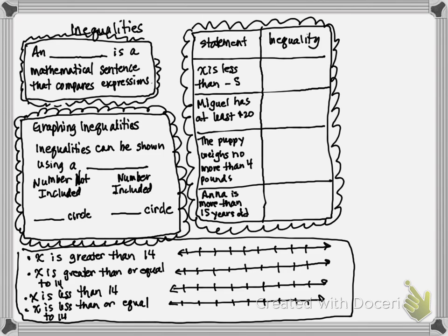An inequality is a mathematical sentence that compares expressions. You might say that sounds like an equation — however, that can also be an inequality because we are comparing two things. However, the variable can be lots of things to make the inequality true. Down below that it says: graphing inequalities — inequalities can be shown using a graph.